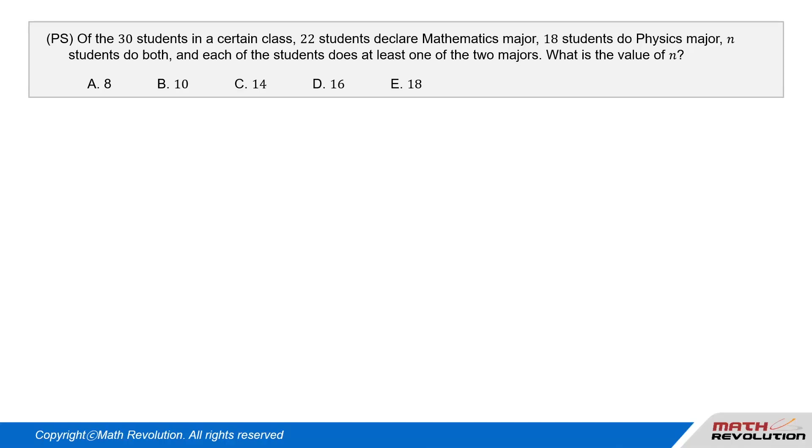Question 1, P.S. Of the 30 students in a certain class, 22 students declare mathematics major, 18 students do physics major, n students do both, and each of the students does at least one of the two majors. What is the value of n?